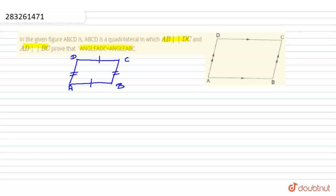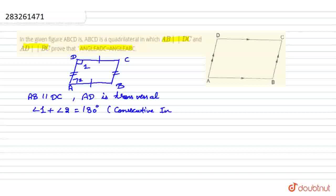If we look at the first condition, AB is parallel to DC. So this AD line is the transversal. Angle 1 and angle 2 are consecutive interior angles. And the sum of consecutive interior angles is 180 degrees. That is, angle 1 plus angle 2 equals 180 degrees, because they are consecutive interior angles.